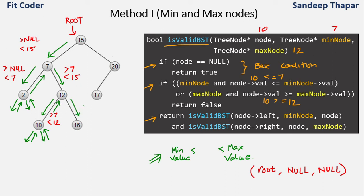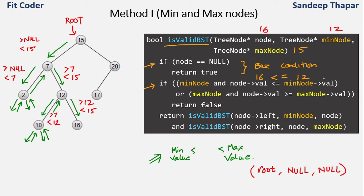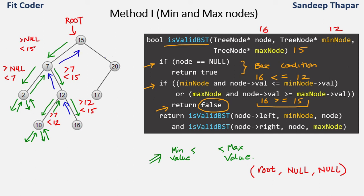For node 16, the range should be greater than 12 and less than 15. The isValidBST call is for node 16 with min=12 and max=15. We check if node is null, then check if 16 is less than 12 — false. Then we check if 16 is greater than 15 — this is true. So we enter the if statement and return false, because node 16 is greater than 15 and should ideally be in the right subtree of 15. The BST property does not hold for node 16, so false is returned up through the call stack to 12, to 7, and then to 15. So isValidBST returns false — this tree is not a BST.